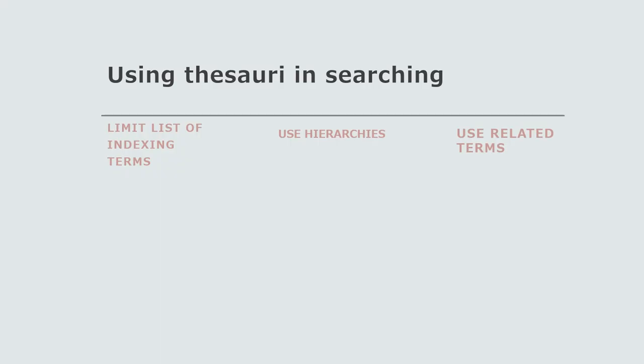This is where thesauri come in. A thesaurus is a listing of controlled vocabulary terminology that is arranged with references to broader terms, narrower terms, related terms, used-for terms, and scope notes. Examples include legislative indexing vocabulary on the congress.gov site, thesaurus of ERIC descriptors in ERIC, and UNBIS thesaurus in the United Nations official document system.